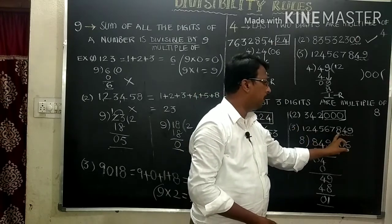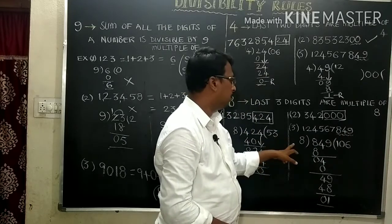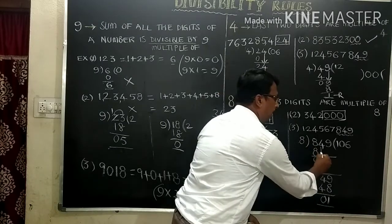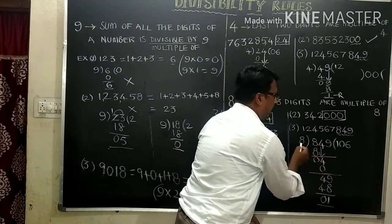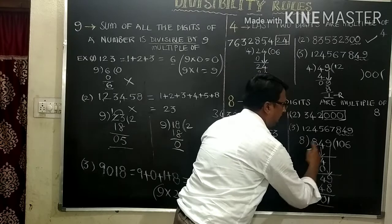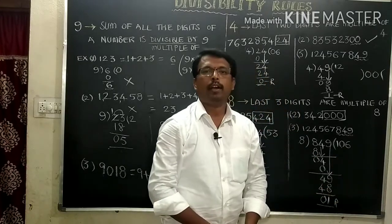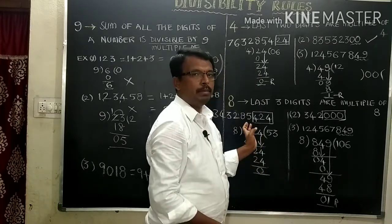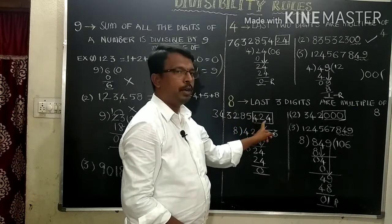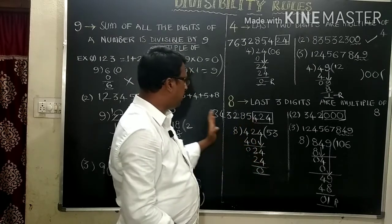Another number: 849. The last 3 digits are 849. Dividing: 8 ones are 8, 8 minus 8 is 0, copy 4, 8 zeros are 0, copy 9 — so 49 divided by 8: 8 sixes are 48, remainder is 1. It can't be divided by 8. Where last 3 digits 424 divide by 8 give remainder 0, that number is divisible.